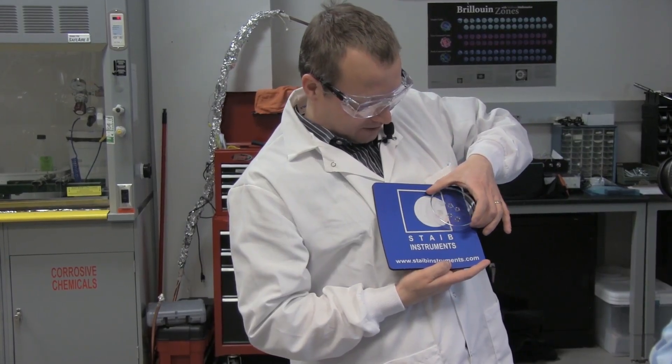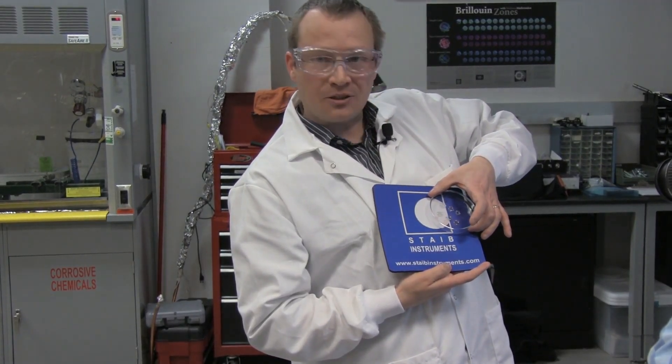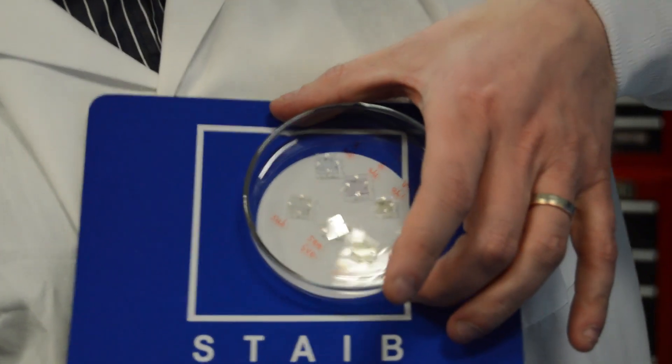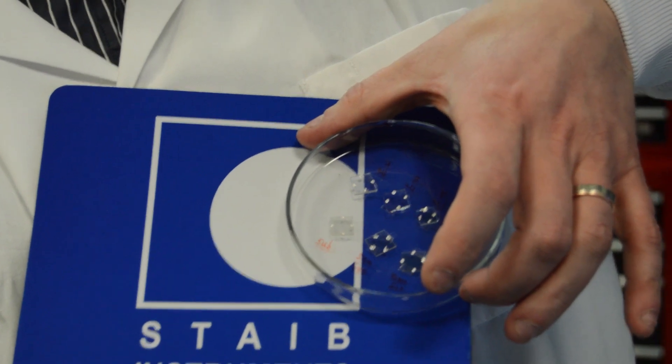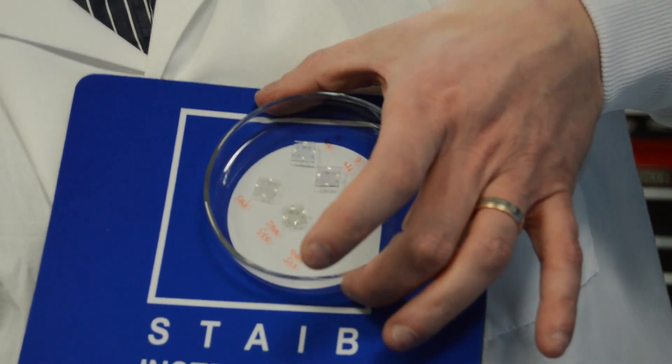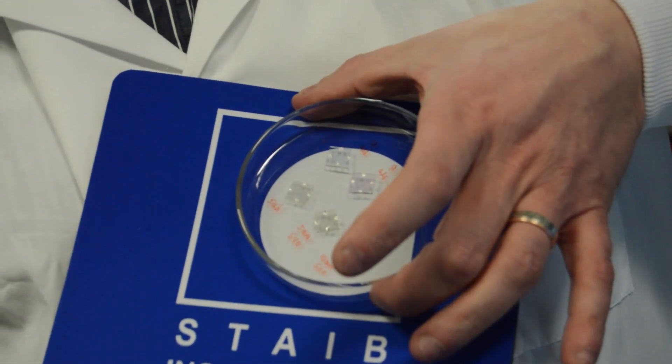Strontium Vanadate is just one example of a transparent conductor. Right now we are working on different types of composition that follow the same new design principle that we've discovered. What I believe is that there's going to be new technology that could emerge from this. What's exciting for me is that this is just the beginning because we are realizing with the new research that is currently going on in the lab that this is just the tip of the iceberg.